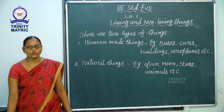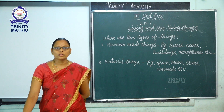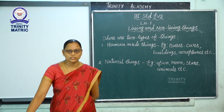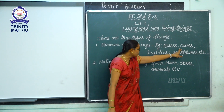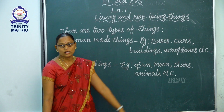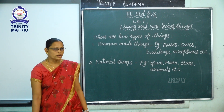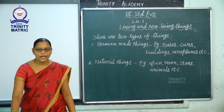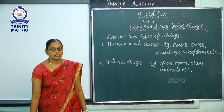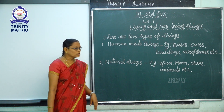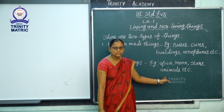What are human-made things? The things which are made only by humans, like aeroplanes, buses, cars, buildings, etc., are called human-made things. Next, what are natural things? The things which are made only by nature are called natural things. For example, sun, moon, stars, animals, etc.